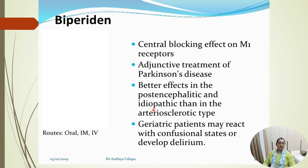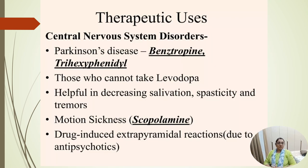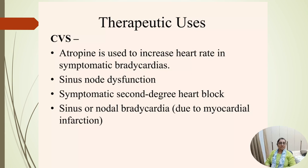Therapeutic uses: for CNS disorders like parkinsonism, benztropine and trihexyphenidyl penetrate the blood-brain barrier and act on the CNS; they are helpful for those who cannot take levodopa, and reduce spasticity and tremor. Scopolamine is used for motion sickness. Centrally acting drugs can be used for drug-induced extrapyramidal side effects.